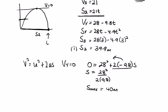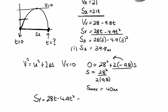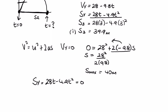At t = 0 the projectile is on the ground, and it returns to the ground at the end. So s_y = 0 at both points. Using s_y = 28t − 4.9t² = 0 and factorising gives us our two time values.